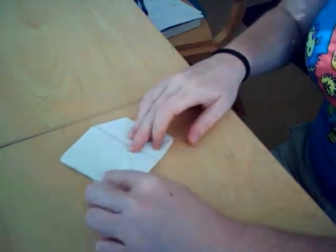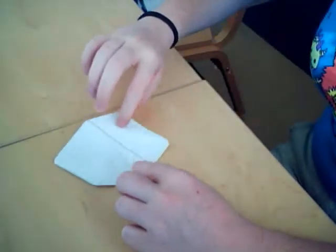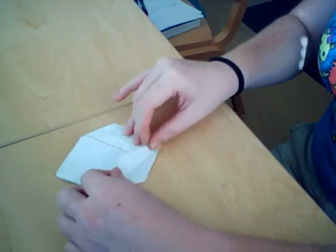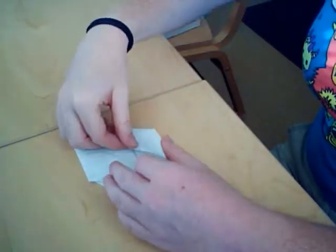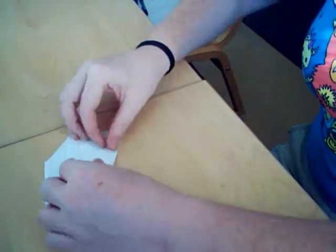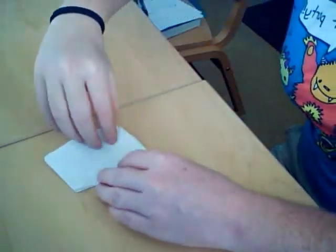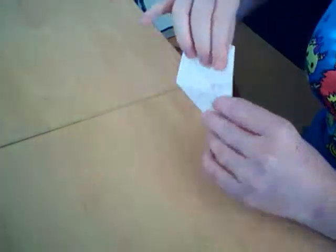Now, you should see a crease right around here. Take the corners again and fold it back into the center. So now, you're back to a kite shape.